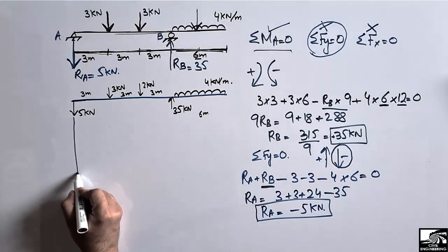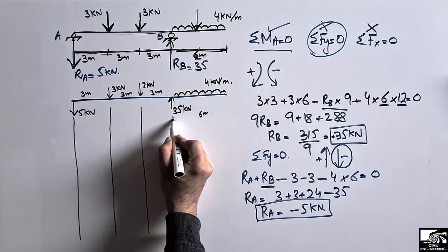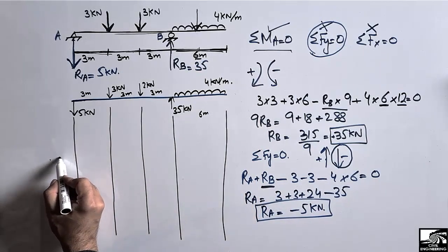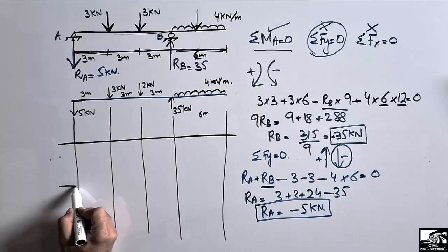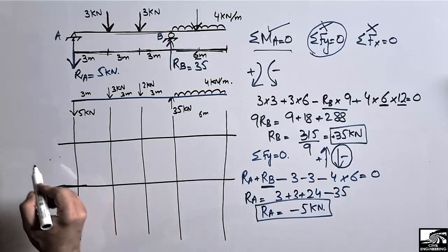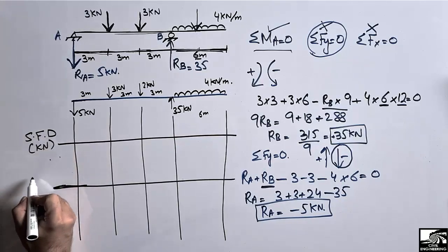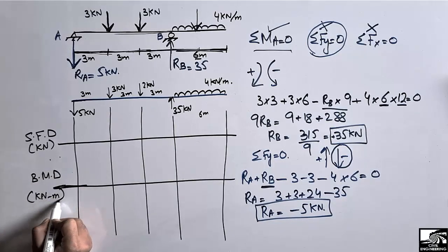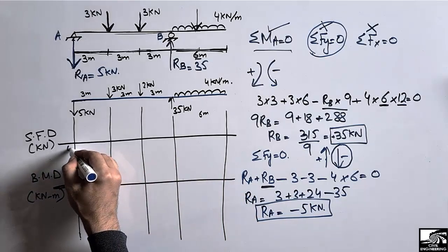Now we draw the reference lines for the shear force and bending moment diagrams. One reference line is for the shear force diagram (in units of kN) and another for the bending moment diagram (in units of kN·m). The zero reference lines are established for both diagrams.